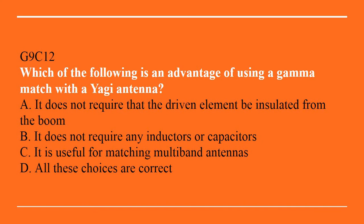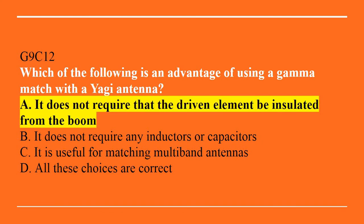G9C12: Which of the following is an advantage of using a gamma match with a Yagi antenna? A. It does not require that the driven element be insulated from the boom. B. It does not require any inductors or capacitors. C. It is useful for matching multiband antennas. Or D. All of these choices are correct. The answer is A — it does not require that the driven element be insulated from the boom.